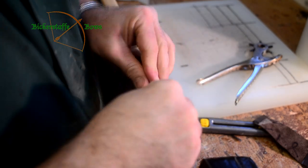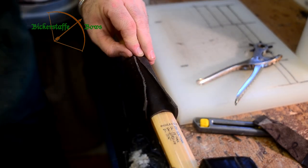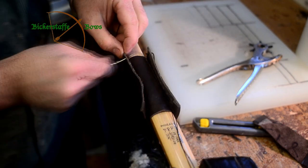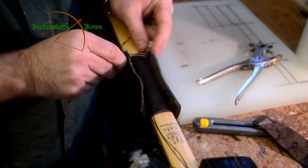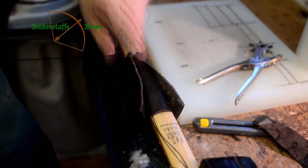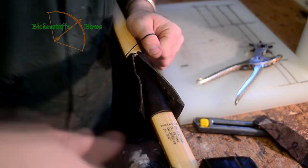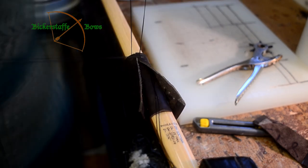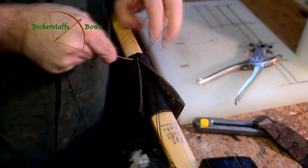Once the grip has been fitted to the bow we're ready to stitch it on. To do this we use a strong nylon thread and a stitch pattern that we've developed over the years that holds the grip firmly in place and looks reasonably neat and tidy.